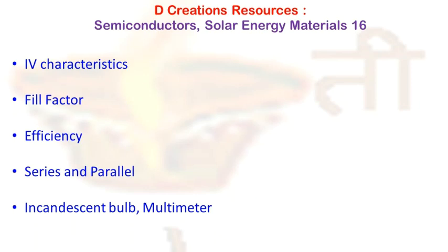When you talk about efficiency, you are basically comparing the performance of one solar cell to another. It is the ratio of energy output from the solar cell to input energy from the sun — that is, how much electrical energy output you get from a given solar energy input. Efficiency depends on the spectrum and intensity of the incident sunlight and the temperature of the solar cell, but from a practical point of view, it is the most important parameter.